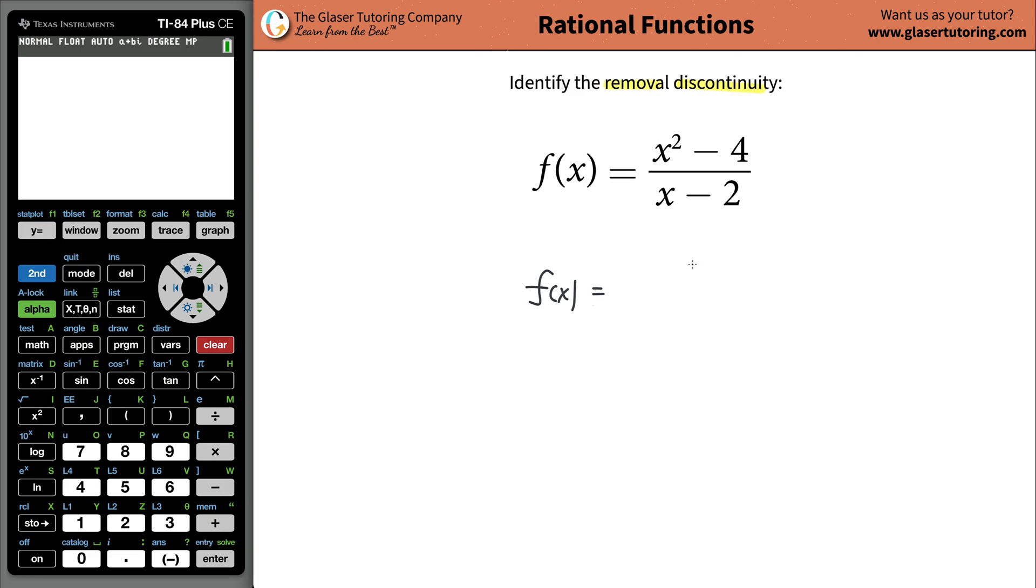Fully factored form on the top. We realize that it's a quadratic equation and it's a perfect square, so we can just do x plus 2 and then x minus 2. If you were to foil this out, it would work out to be that. And then you're going to divide it by the fully factored form of the denominator, which is just x minus 2.